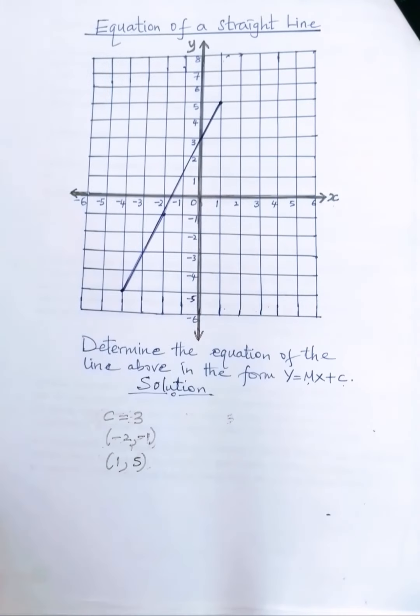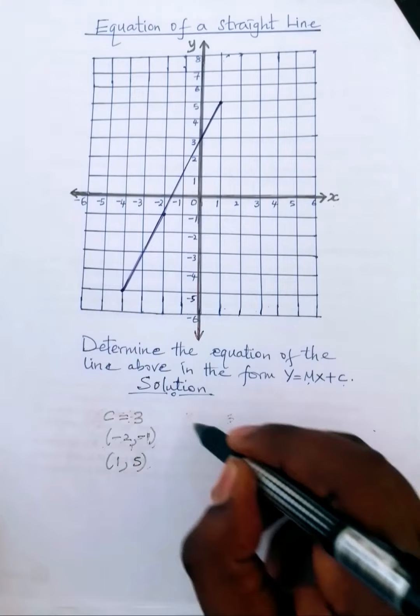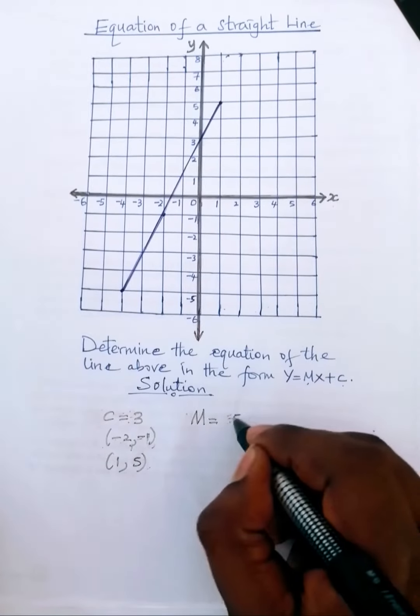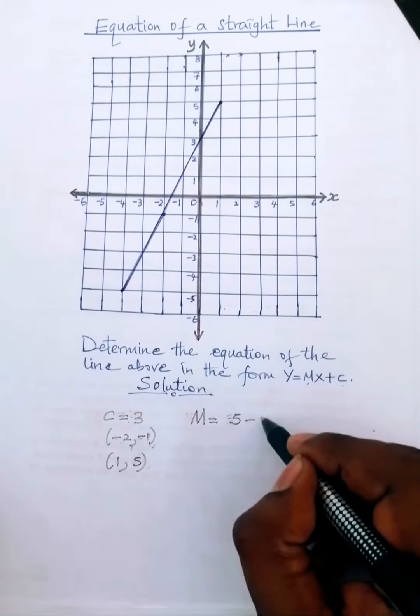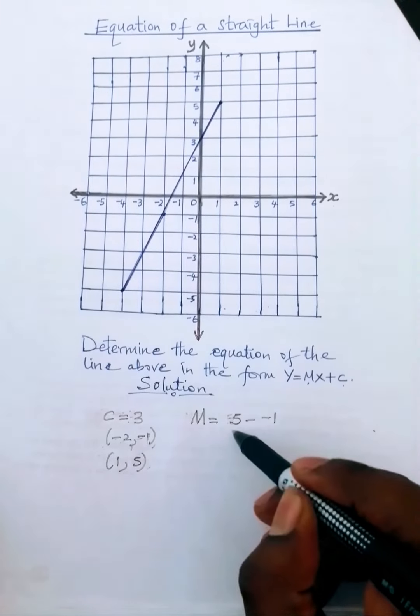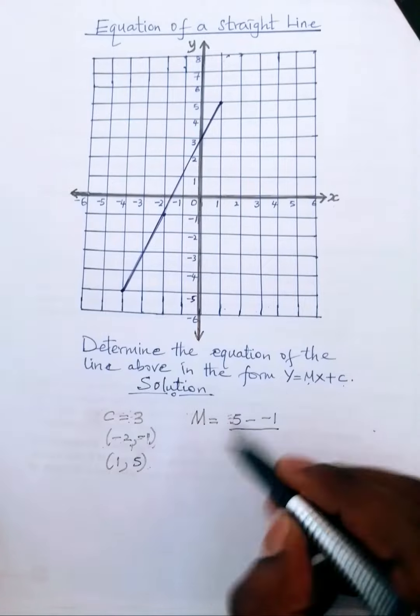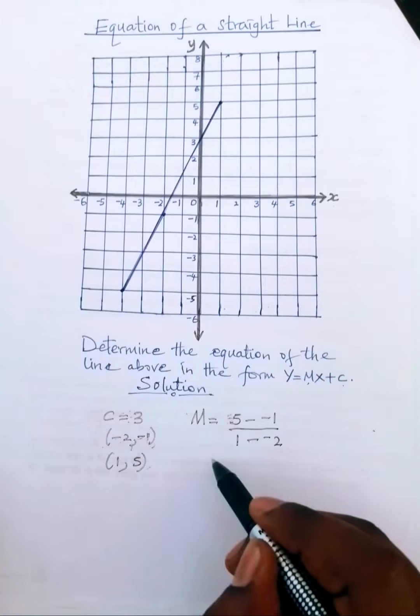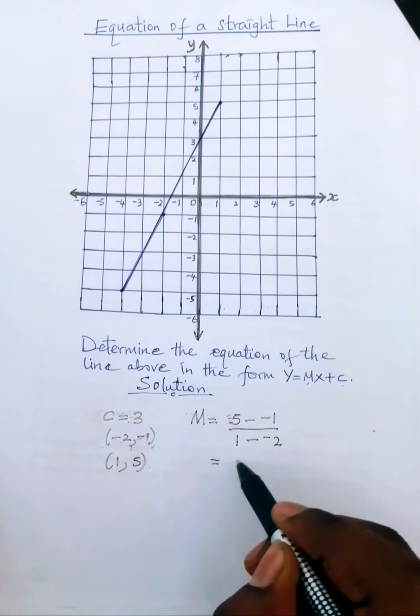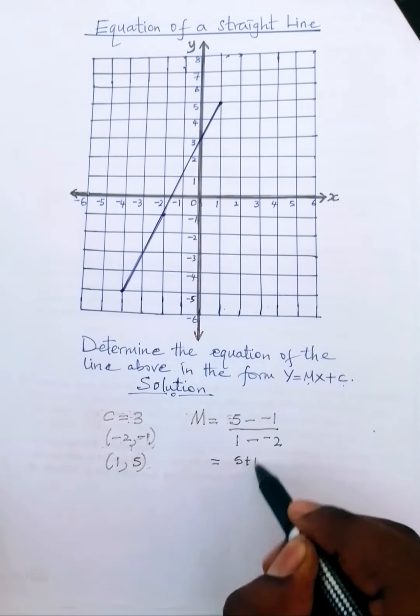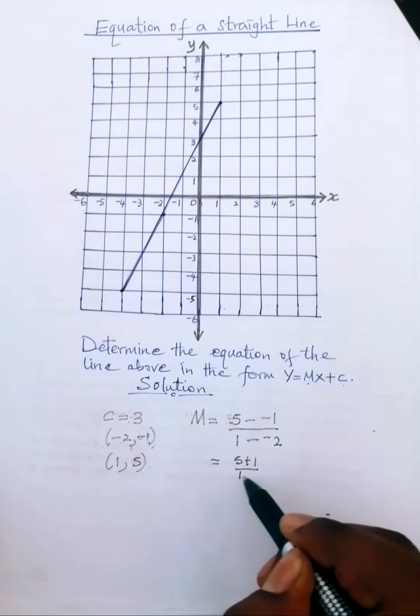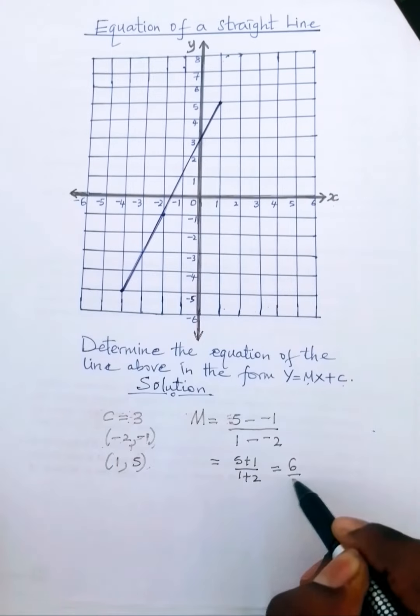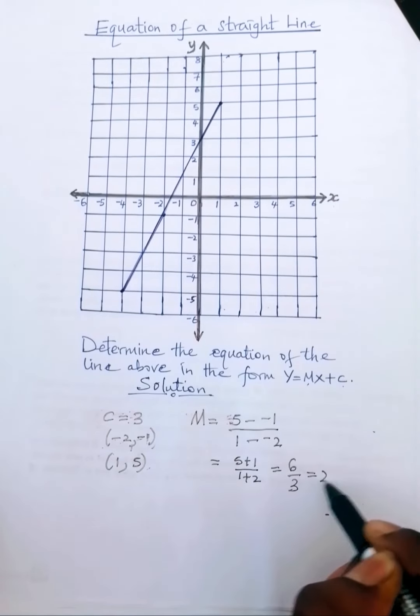So let's use those two points to determine the gradient. The gradient m is equal to the change in y. So we say 5 minus negative 1 divided by 1 minus negative 2. And that gives us 5 plus 1 divided by 1 plus 2, which becomes 6 divided by 3. And that gives us 2.